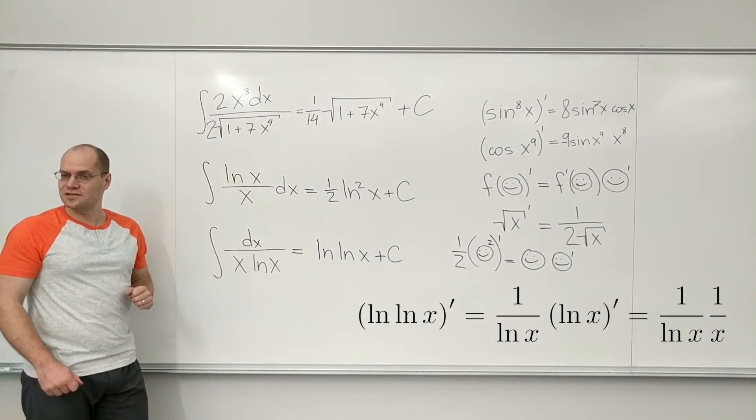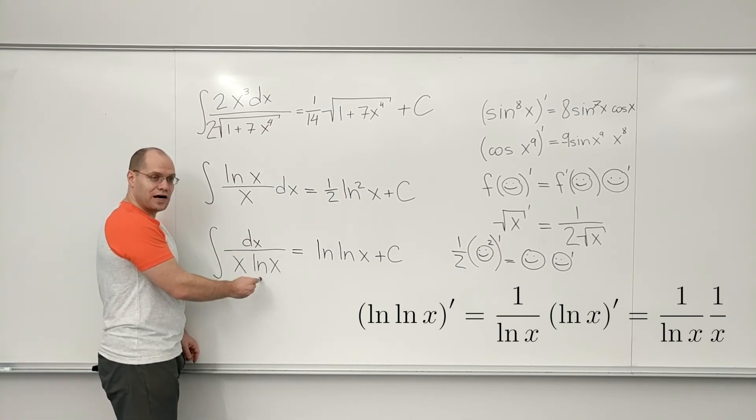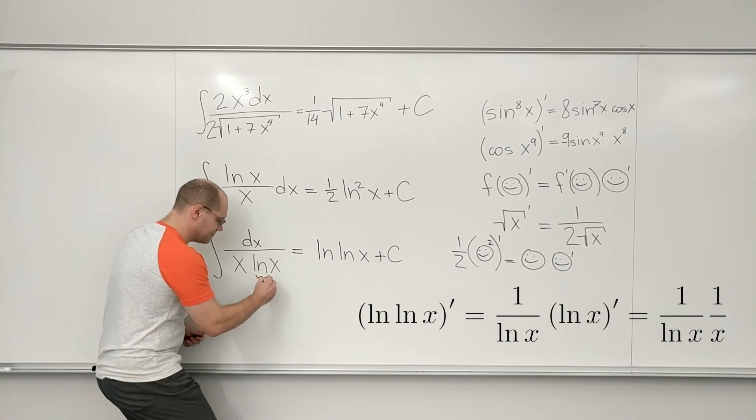And you end up with this. So this is correct. So the skill is to be able to look at this and see that it's 1 over something.